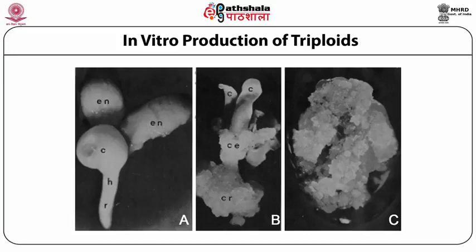Otherwise, the embryo will also start to callous and the two types of calli — the endosperm callus and embryo callus — may mix up. The embryo callus is diploid and the endosperm callus is triploid. Once you remove the embryo, the endosperm continues to proliferate and you can get a tissue culture established. The immature endosperm is still the explant of choice because the mature endosperm in cereals is physiologically dead and doesn't divide. In other plants where endosperm is absent at maturity because it is consumed during seed development, one can culture endosperm only at the immature stage.